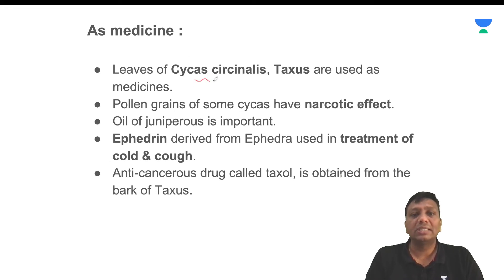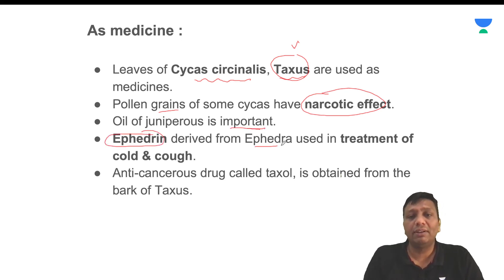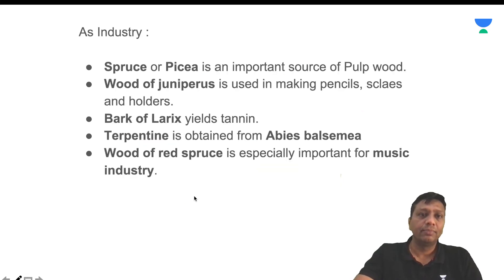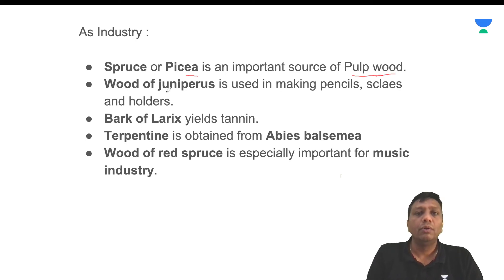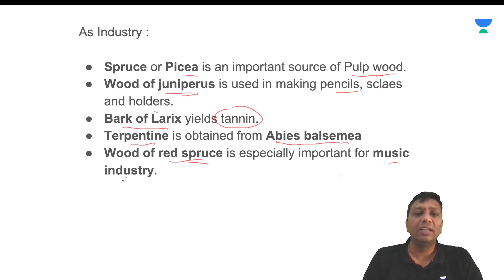Some gymnosperms have medicinal values: Cycas, Ginkgo, and Taxus — with Taxol as an anti-cancer drug obtained from the bark of Taxus. Pollen of some gymnosperms have narcotic effects. Oil of Juniperus is very important. Ephedrine is obtained from Ephedra plants and is used in treatment of cold and cough. For industrial purposes: Abies and Picea are sources of softwood. Wood of Juniperus is used for making pencils, scales, and holders. Larch (Larix) is used for tannin. Turpentine is developed from Abies balsamea. Wood of Red Spruce is used in various music industries.